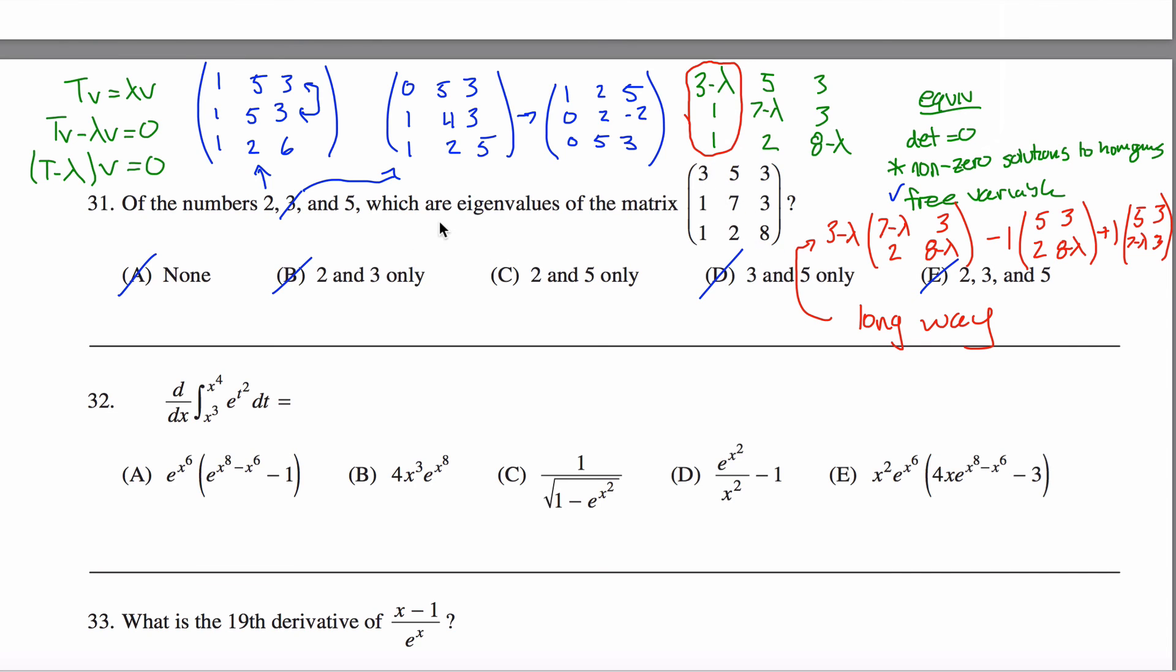We'll go one more step, subtract 5 from all the entries on the diagonal. So negative 2, 5, 3. And then 1, 2, 3. And then 1, 2. And then 8 minus 5 is 3.